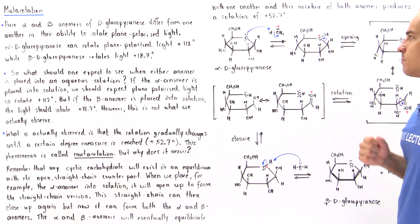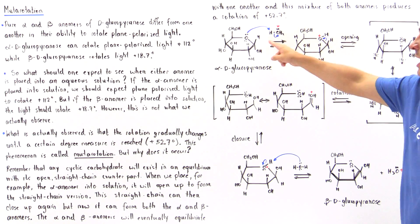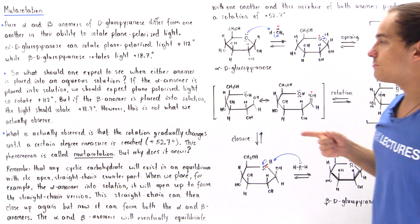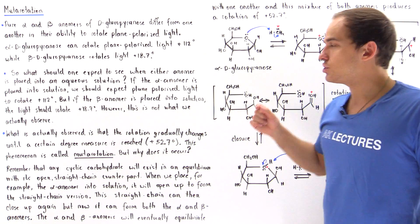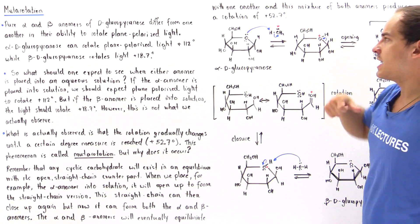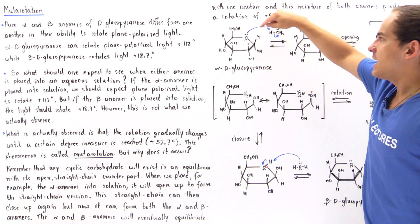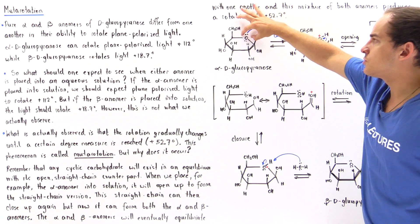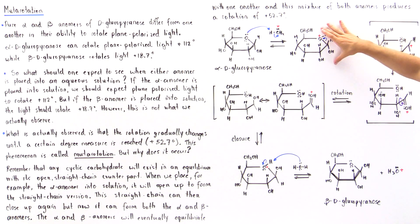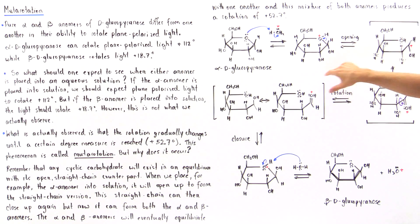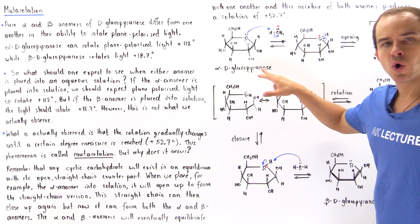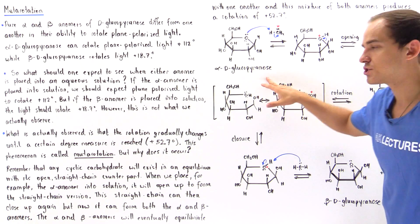Because we are in the presence of the hydronium acid, in the first step we have protonation of this oxygen taking place. If this oxygen is protonated, we form this protonated version of alpha-D-glucopyranose.